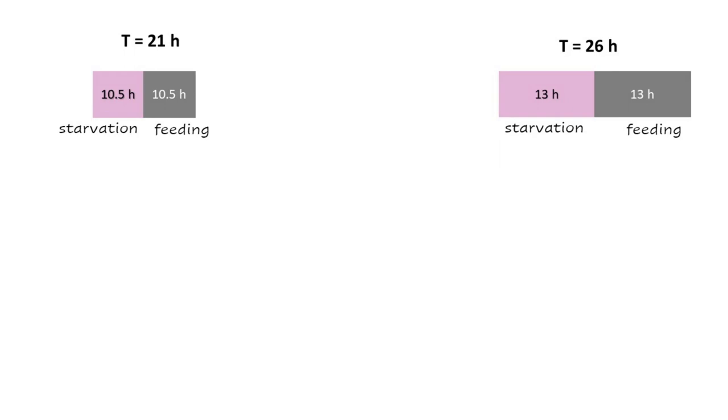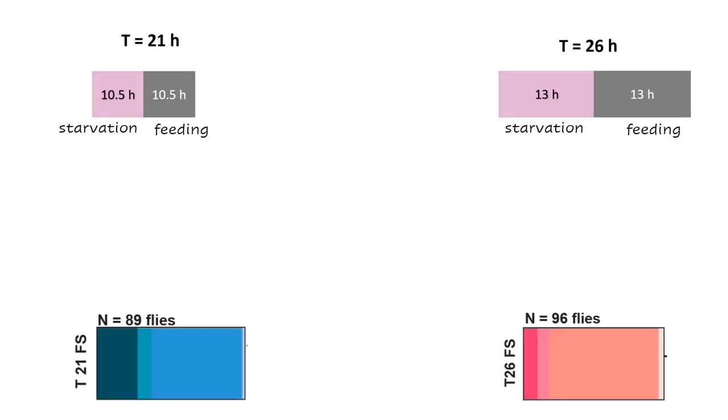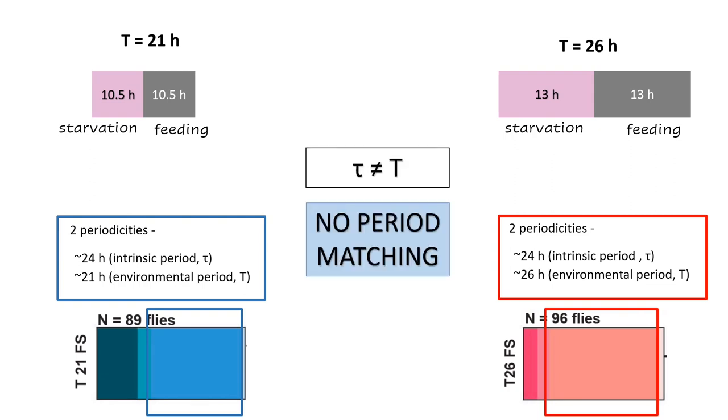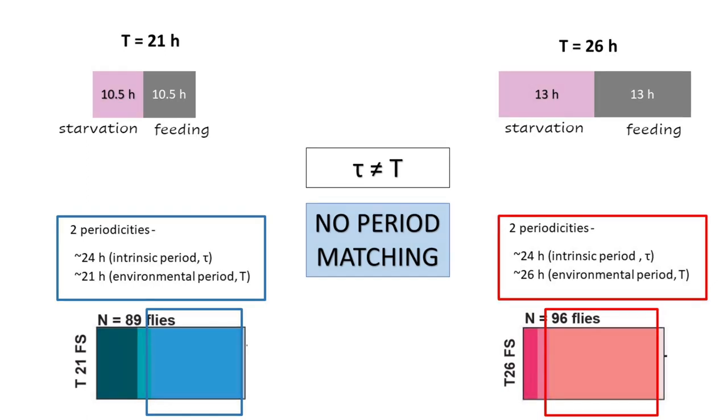We found that the majority of the flies showed two distinct periodicities. One closer to the intrinsic period and the other closer to the environmental period. Importantly, the intrinsic period of fly activity clocks does not match the period of the environmental feeding-starvation cycles, thereby showing no period matching when food was the time cue.